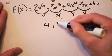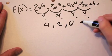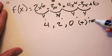Next, we count down by two until we get to zero. This gives us our total possible positive roots.